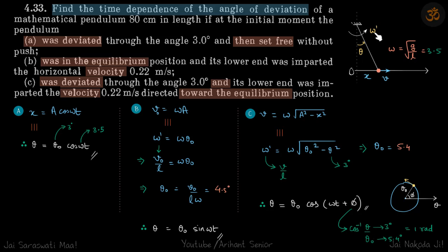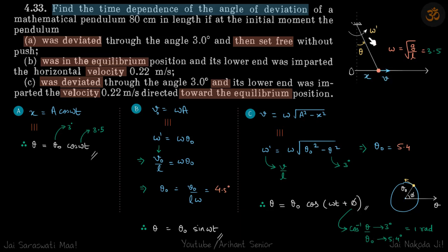This ω' is not the time period — it is just the angular velocity of the bob. The actual omega of the SHM is √(g/l), which is a constant. But ω' is the angular velocity of the bob, so it will change: here it will be maximum, and when it reaches its extreme, ω' will be zero — just like in linear SHM, when at the mean position x is zero, and when it reaches maximum, x becomes the amplitude.